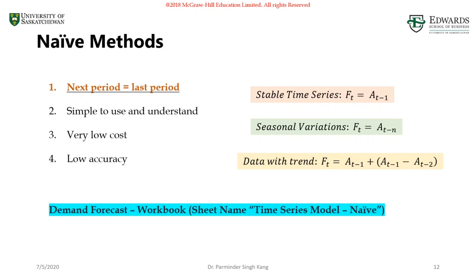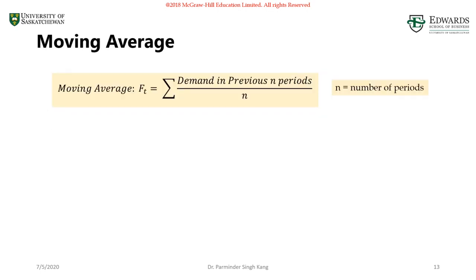We already talked about the naive forecasting methods — very low cost, simple to use. Next we're going to talk about averaging methods. The very first one is moving average. The idea behind averaging methods is to deal with random variation. If you have a time series that doesn't exhibit any seasonality or trend, built up only of random variation, averaging methods are the best choice. They're also very good for producing short-term forecasts with a stationary time series.